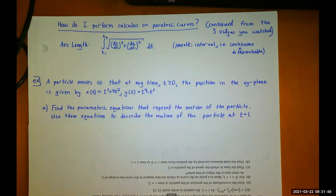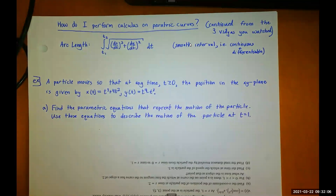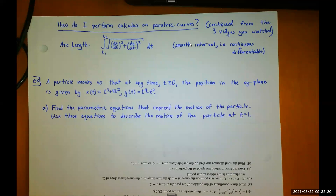Here's a problem: a particle moves so that at any time t, where t ≥ 0, the position in the xy plane is given by x(t) = t³ + 4t² and y(t) = t⁴ − t³. This is going to be the first thing you work on today. Find the parametric equations that represent the motion of the particle and use these equations to describe the motion of the particle at t = 1.